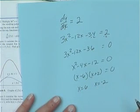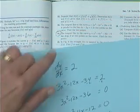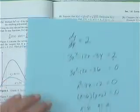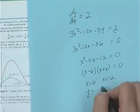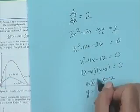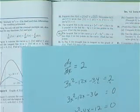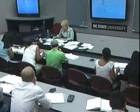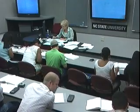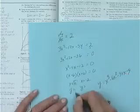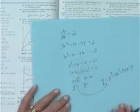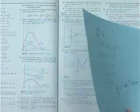Have I finished answering the question? No — it said find the points, so you have to find a y value too. Put x = 6 back into the original equation to find its y value, not into the derivative. We're stopping there because we've got lots to do today.